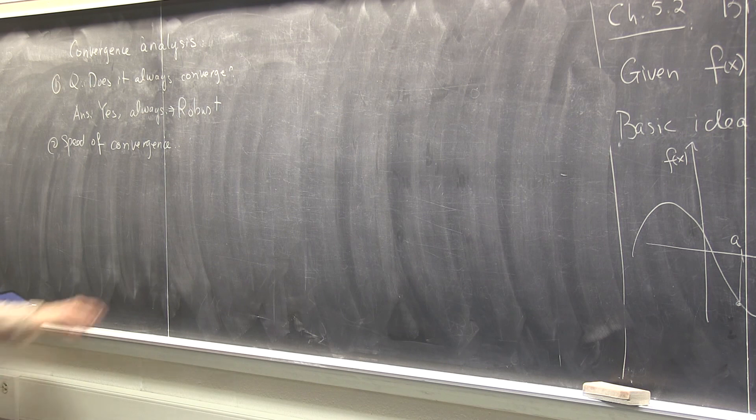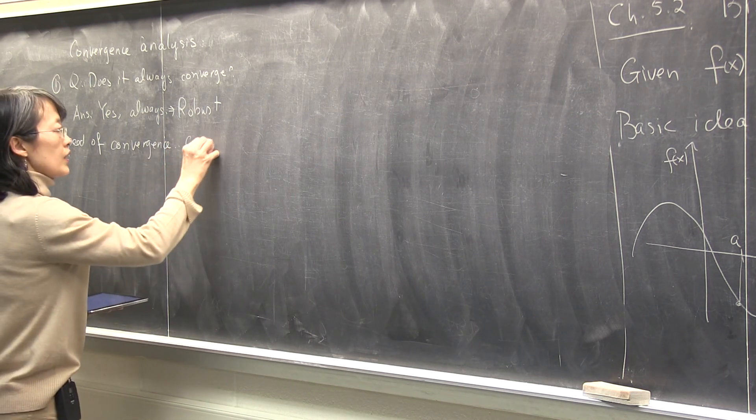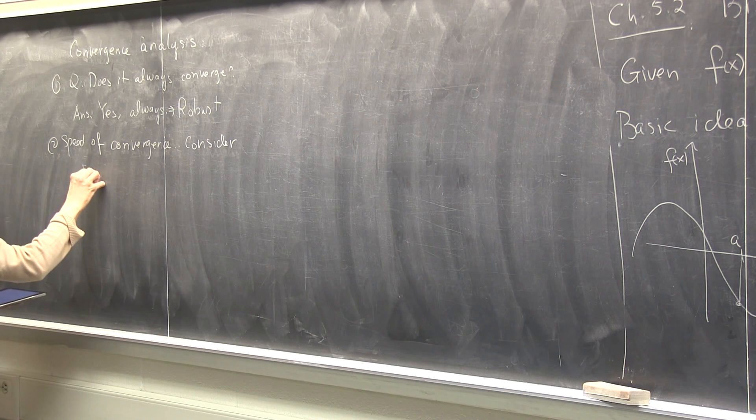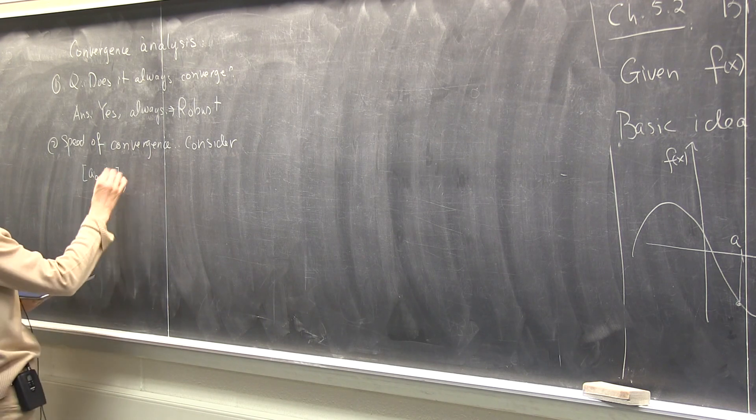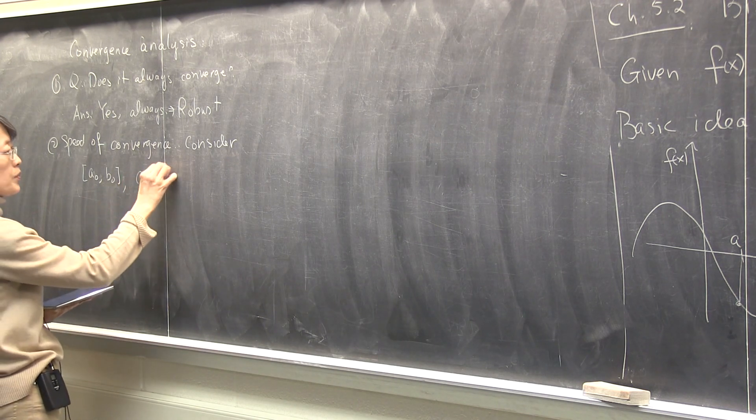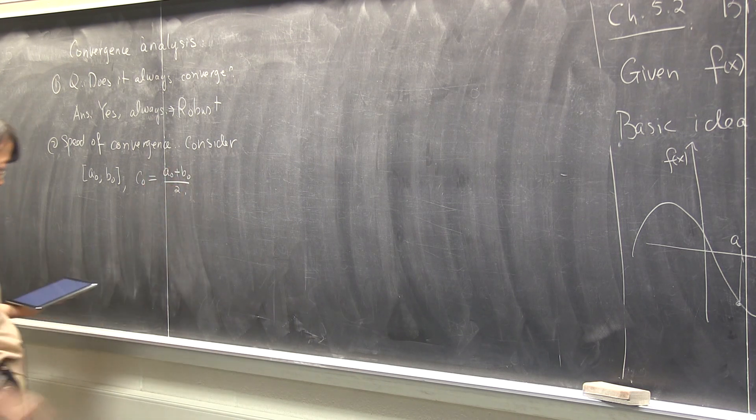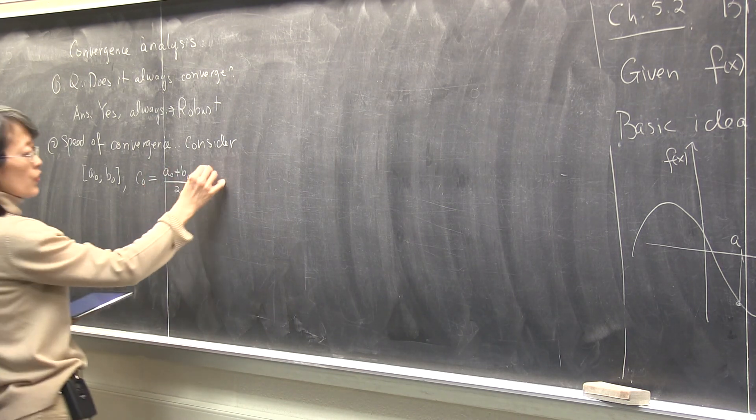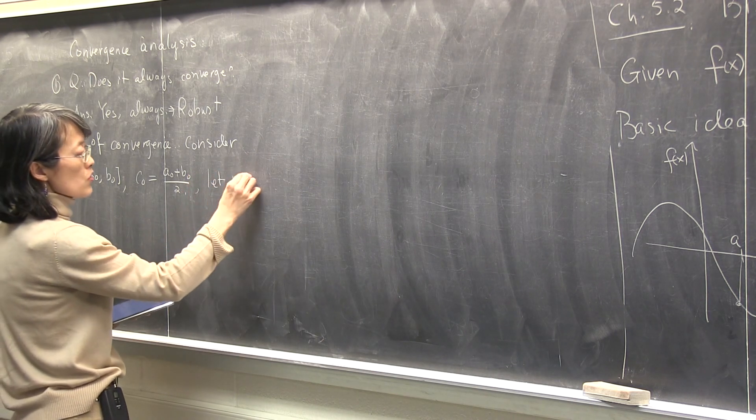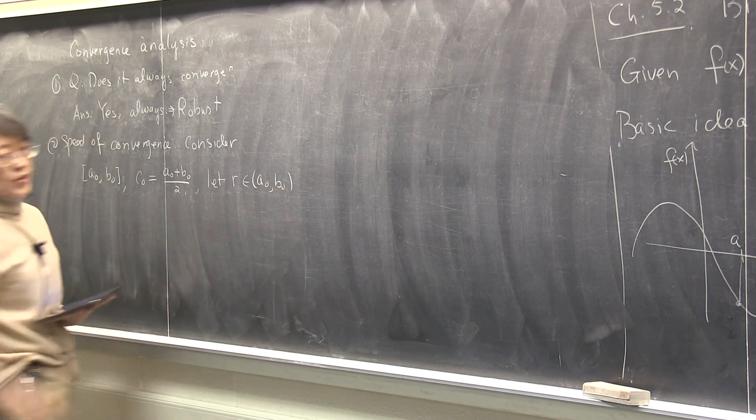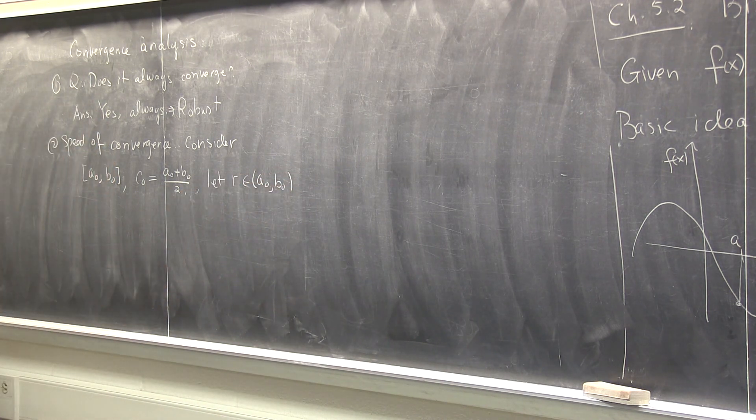So, consider an interval a zero, b zero. Now I'm going to give them an index. So that's the initial interval a zero, b zero, and the initial mid-value c zero, is just that. And then, initially, you also know there is a root on the interval from a zero to b zero. You initialized it. So I want to define some error.